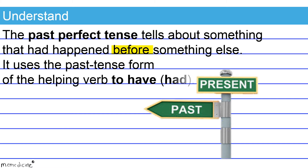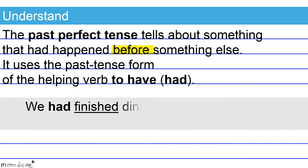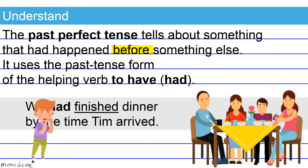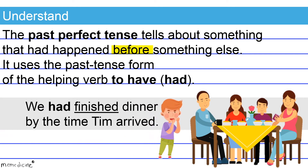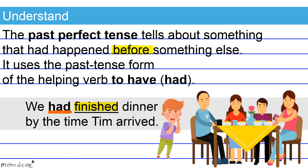It uses the past tense form of the helping verb 'to have,' which is 'had.' Check out this example: 'We had finished dinner by the time Tim arrived.' We've used the past tense form of 'to have,' which is 'had,' across the board regardless of whether the subject is plural or singular, and we've paired it with the past participle of the main verb. 'Finished' is regular — its past participle and its past tense form are the same. So 'had finished' is the correct past perfect tense verb form.